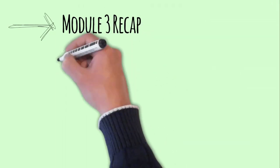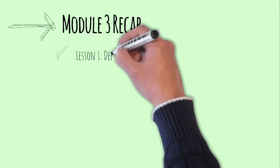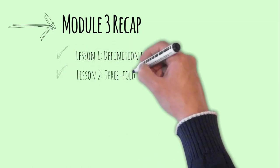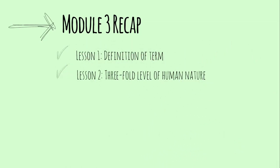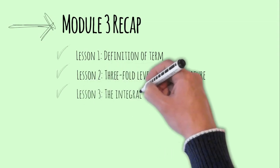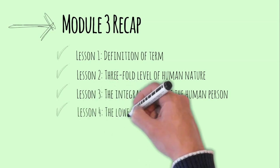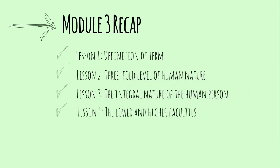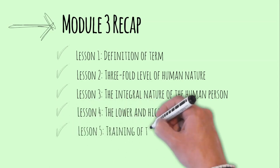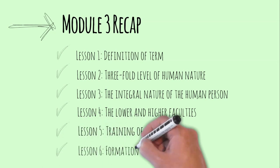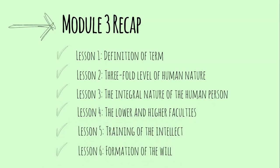Let's have a quick recap of Module 3, Nature of the Human Person. In Lesson 1, we defined the term human nature. In Lesson 2, we learned the three-fold level of human nature. In Lesson 3, we studied the integral nature of the human person. Then, we moved to Lesson 4, where we talked about the lower and higher faculties. Then, in Lesson 5, we discussed some ways how to train the intellect, and why we should train the intellect. And in the last lesson, Lesson 6, we learned some ways how to form the will of our students.